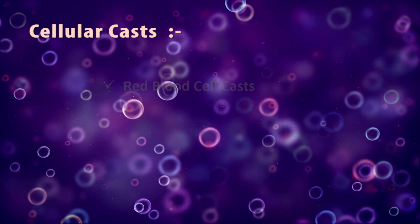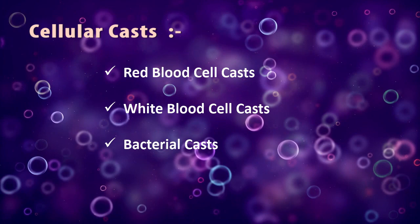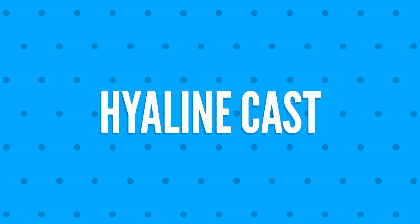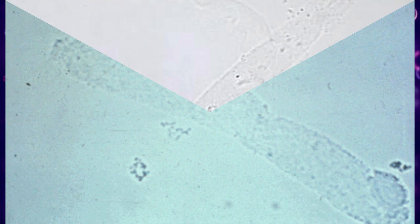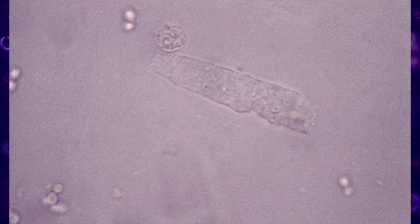Hyaline casts are the most common type of casts, composed of solidified Tamm-Horsfall mucoprotein. They have a smooth texture and a refractive index very close to that of the surrounding fluid, with parallel sides, clear margins, and blunted ends.